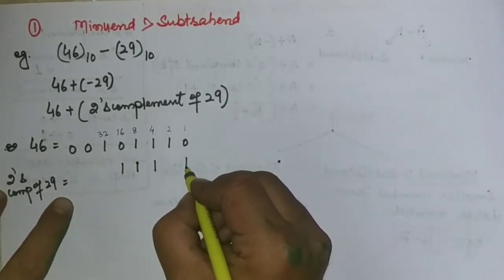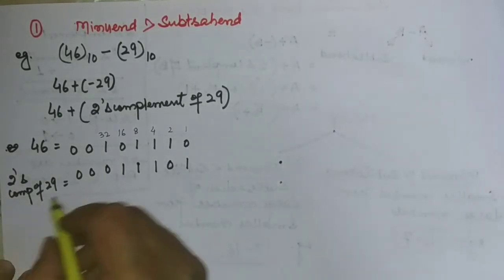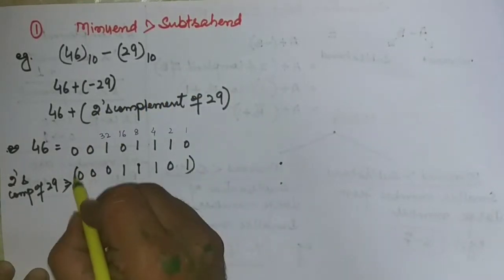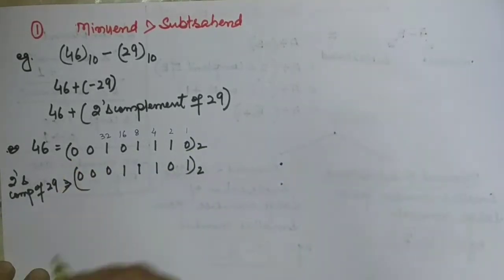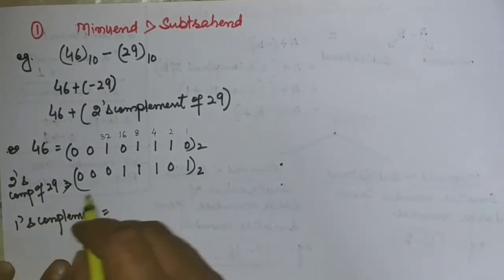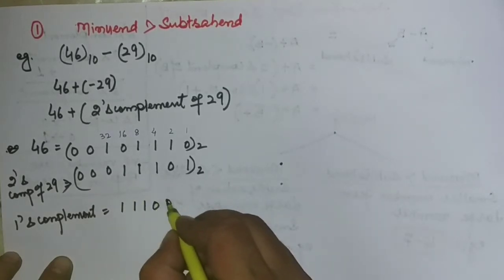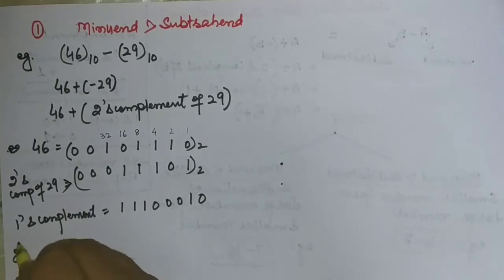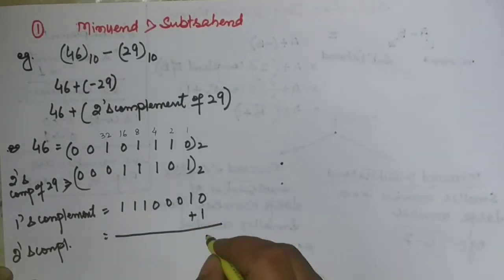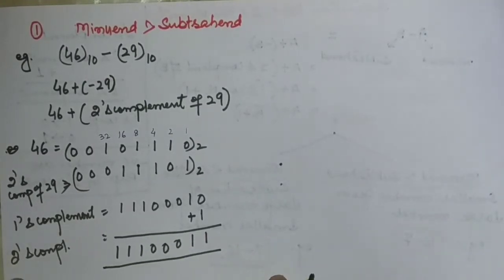Now we get the two's complement of the subtrahend 29. First write 29 in binary form: 00011101. Now take the one's complement — convert 0 to 1 and 1 to 0 — which gives 11100010. Then to get two's complement, add 1, giving us 11100011. So this is the two's complement of the subtrahend.